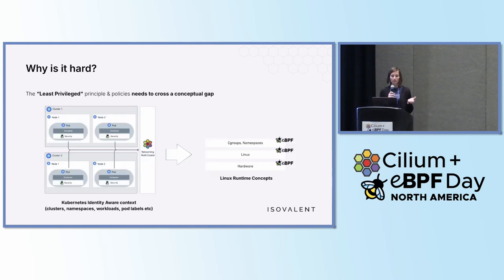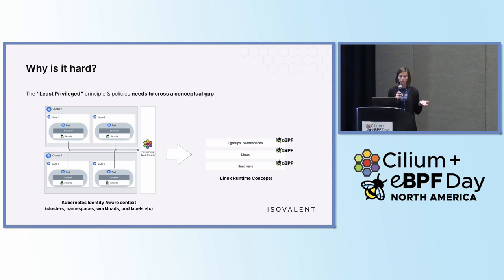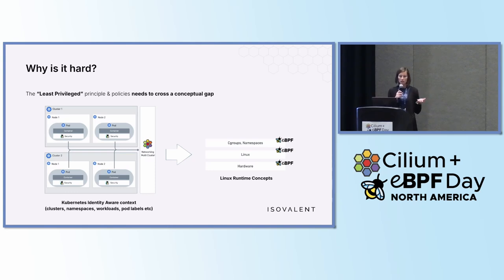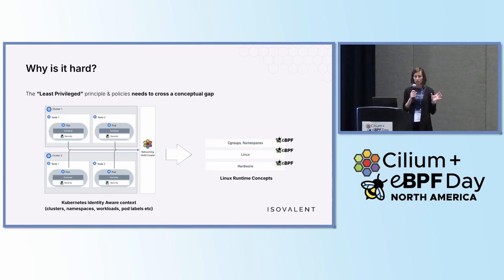We will be talking about eBPF today. Both the least-privileged principle and the policies actually need to cross a conceptual gap. eBPF is a Linux kernel technology — it lives down in the kernel, and all of its tooling as well. There you have cgroups and namespaces, the Linux operating system, which runs on top of hardware. But this is not what a Kubernetes operator or a platform team would look at. They are looking at Kubernetes identity-aware contexts — clusters, namespaces, pod labels. So least-privileged needs to cross this gap between what the Linux kernel knows about and what a SecOps team is looking at.